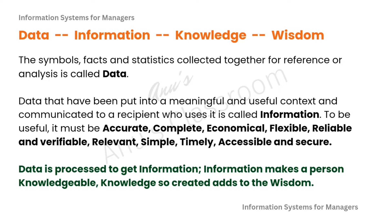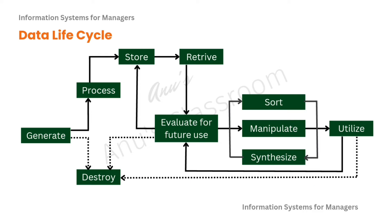We can say that data, once processed, will become information, and that information is what makes a person knowledgeable, and our knowledge is what creates or adds to our wisdom. So the entire data life cycle goes like this: first, data gets generated. Once data is generated, we have two options — we can either process it or destroy it. Some data we ignore and immediately destroy.